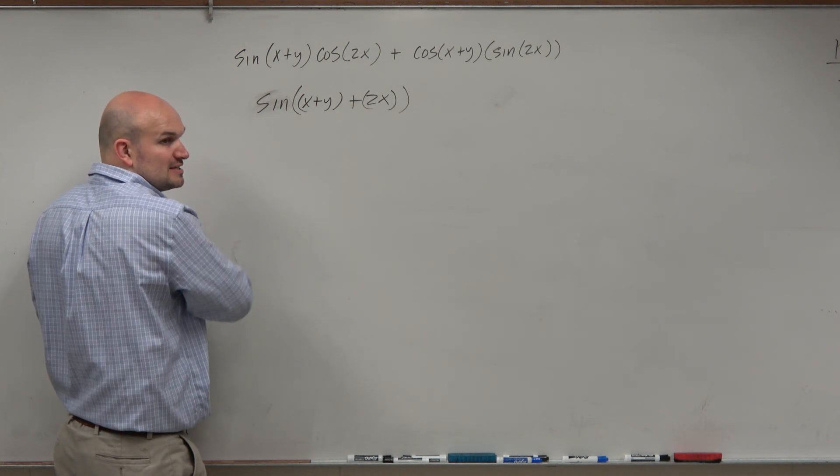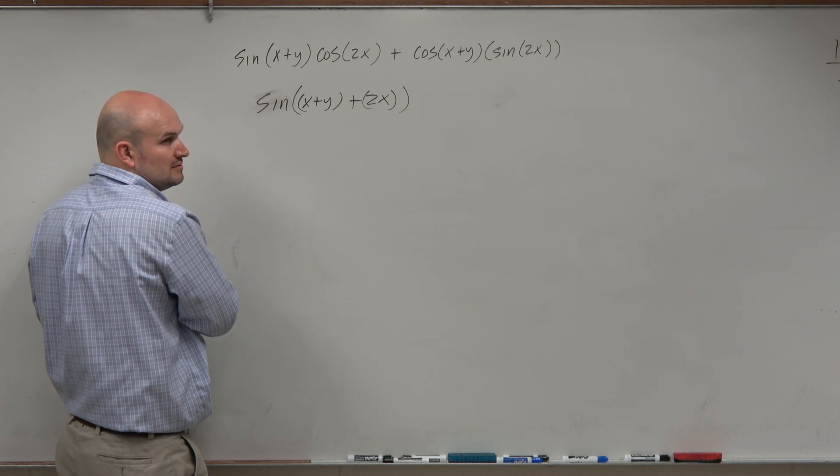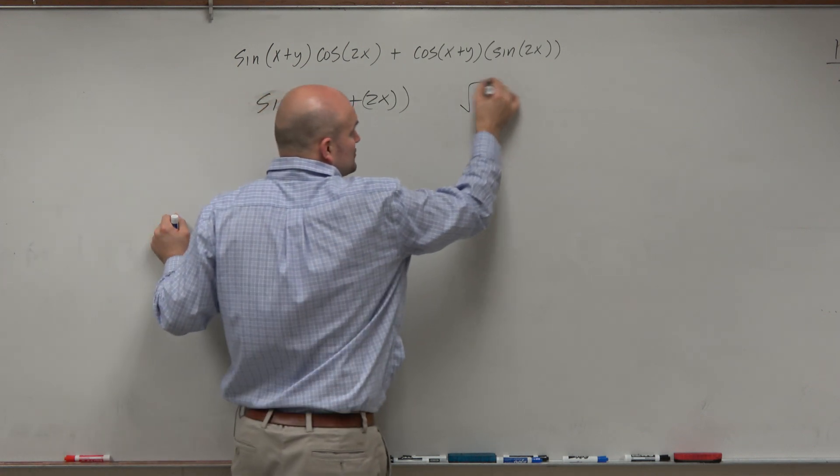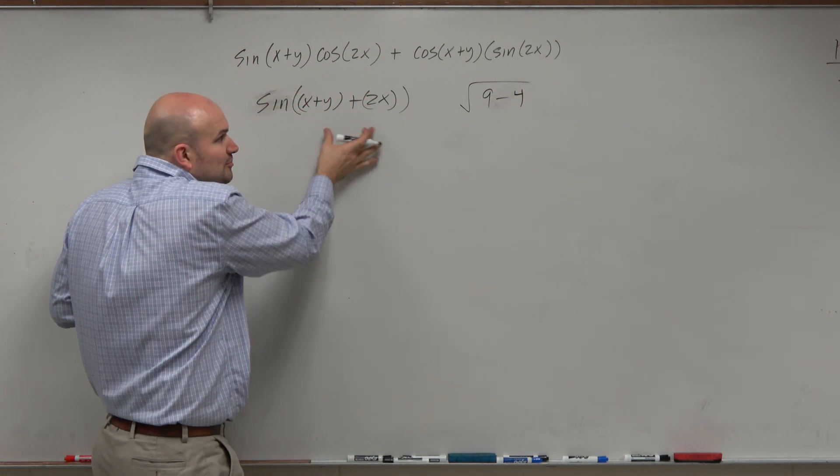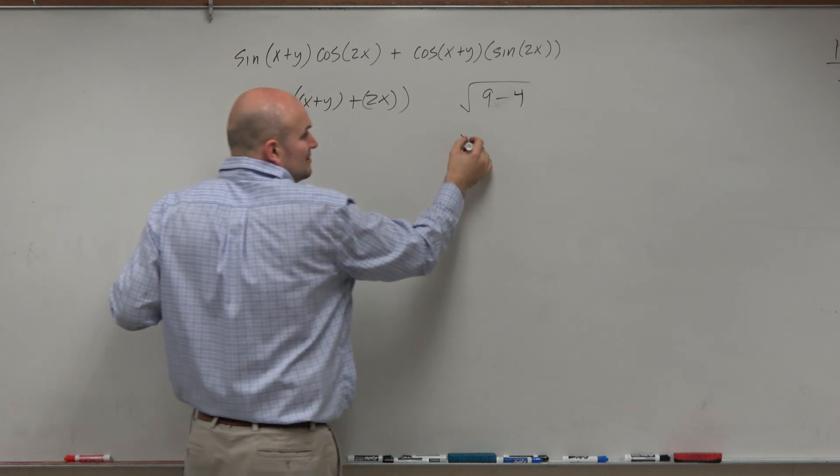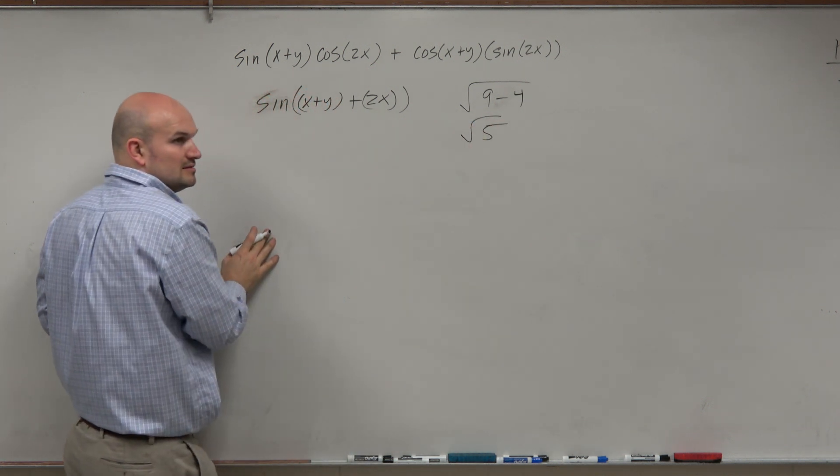And now, can I simplify this a little bit further? Can I simplify the square root of 9 minus 4? Yeah, they're both inside the function, right? So you subtract them.